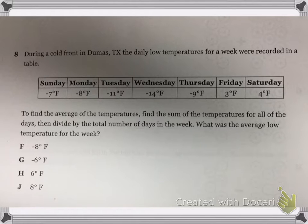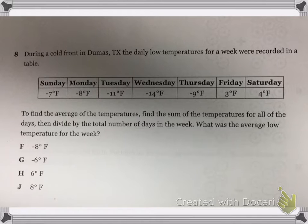During a cold front in Dumas, Texas, the daily low temperatures for a week were recorded in a table, from Sunday through Saturday. To find the average of the temperatures, find the sum of the temperatures for all the days, then divide by the total number of days in that week. What was the average low temperature for the week?